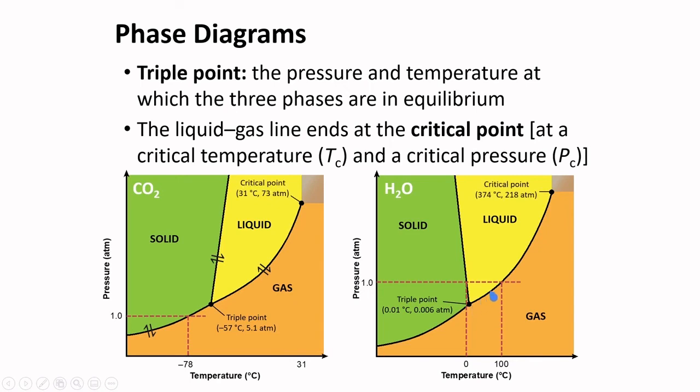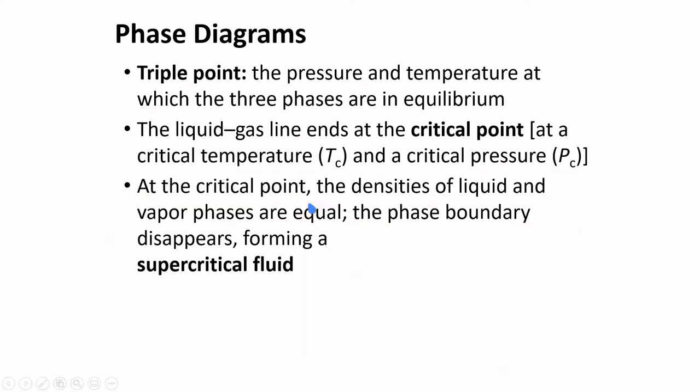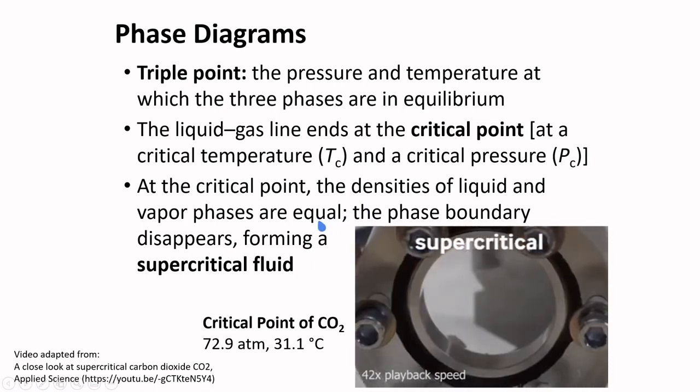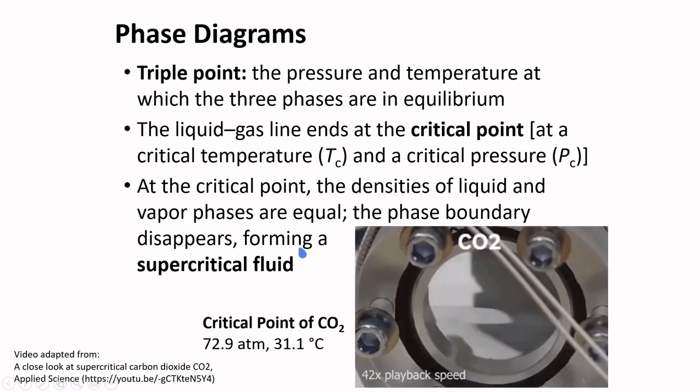The liquid and gas line ends at the critical point. Here we have a critical temperature and a critical pressure. At the critical point, the densities of liquid and vapor phases are equal. The phase boundary disappears, forming a supercritical fluid.